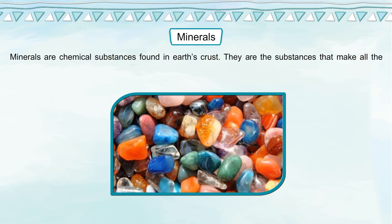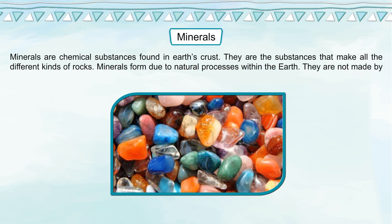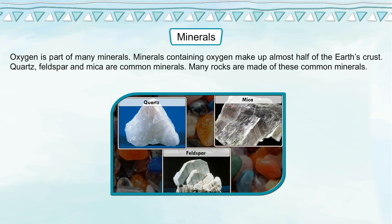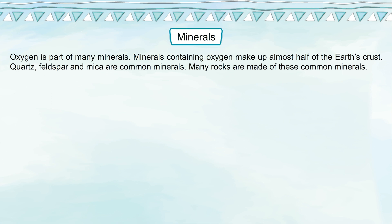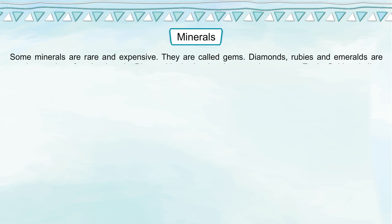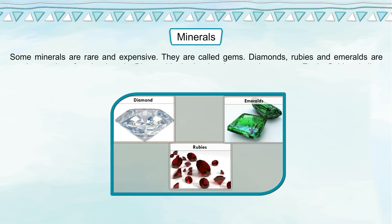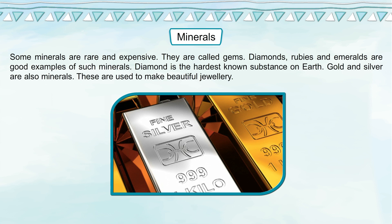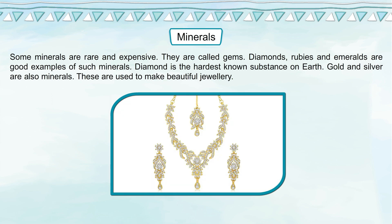Minerals are chemical substances found in earth's crust. They are the substances that make all the different kinds of rocks. Minerals form due to natural processes within the earth and are not made by humans. Oxygen is part of many minerals — minerals containing oxygen make up almost half of the earth's crust. Quartz, feldspar, and mica are common minerals. Some minerals are rare and expensive and are called gems — diamonds, rubies, and emeralds are good examples. Diamond is the hardest known substance on earth. Gold and silver are also minerals, used to make beautiful jewellery.